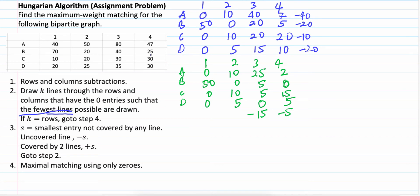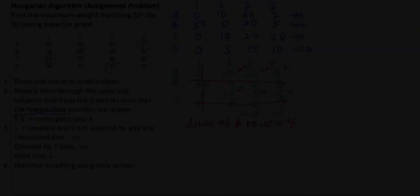Now, step number 2. Draw lines that cover the zeros. It seems like we have 4 lines and it is equal to 4 rows. But this is not the minimum number of lines. We can draw 3 lines. So, number of lines is 3, not equal to number of rows which is 4.